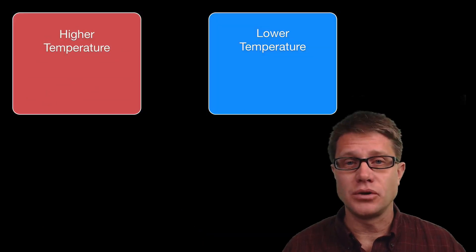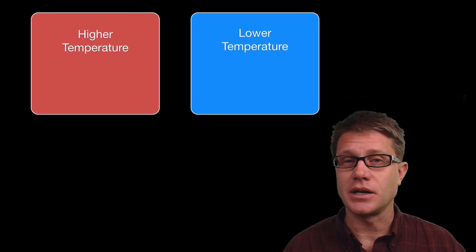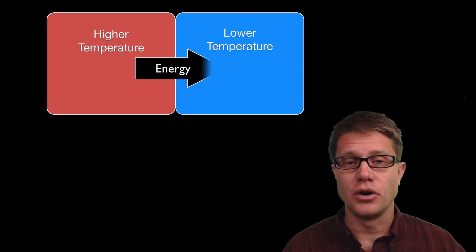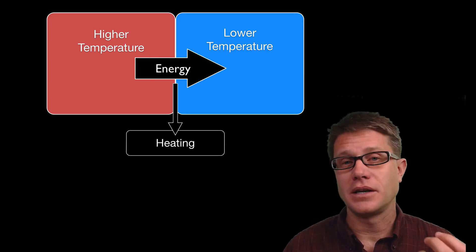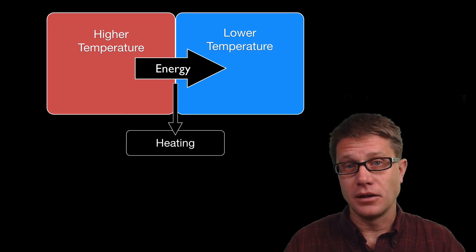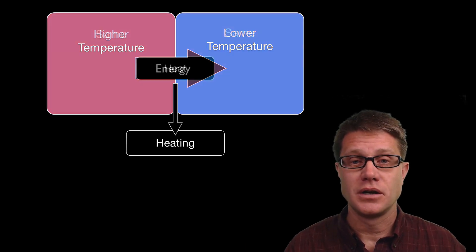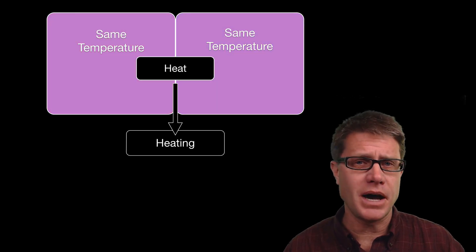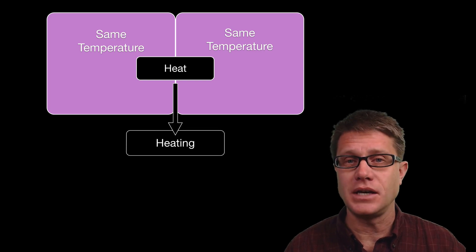But let us say we do have two objects, one hotter than the other and we connect them. Energy is going to flow between the two, and so that process is called heating. Now that heating over time will cause the higher and lower temperatures to eventually reach the same temperature. And the amount of energy that has been transferred is heat.